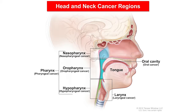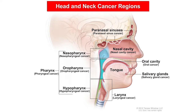Laryngeal cancer develops in the larynx, or voice box. Nasal cavity and paranasal sinus cancer develop in the nose and the small, hollow spaces in the bones around the nose. And salivary gland cancer develops in the glands in the mouth that produce saliva.